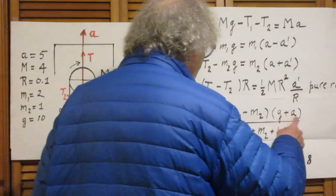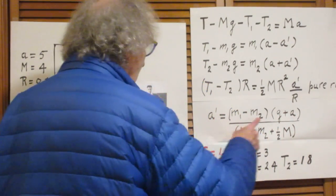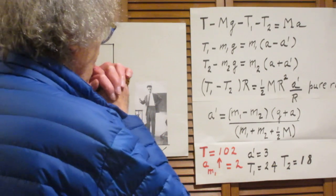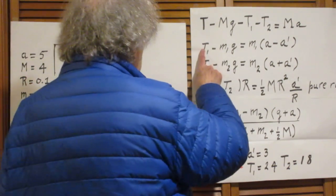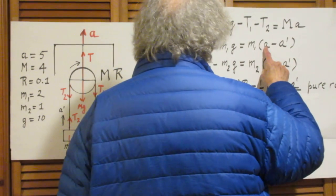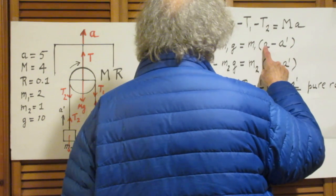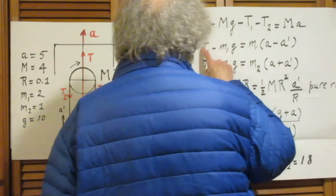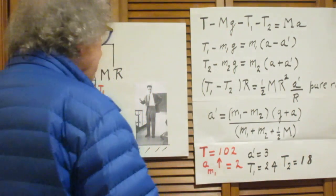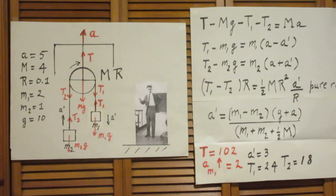Put in a equals minus g, a prime goes to zero. Go here, a prime is zero, a is minus g, T1 will be zero and the same is true for T2. So all these equations are very reassuring that we did it right.